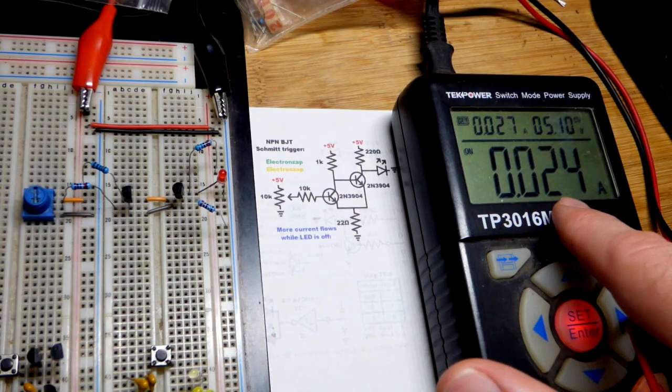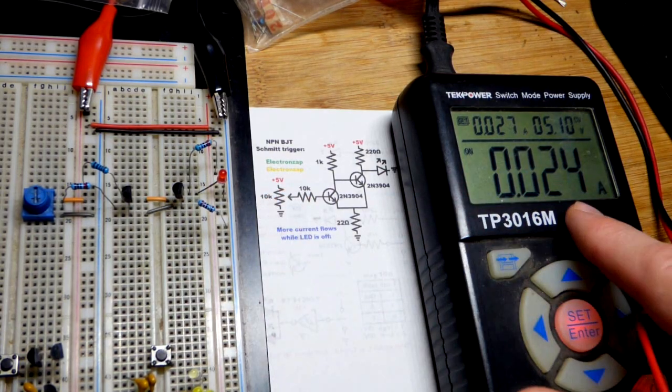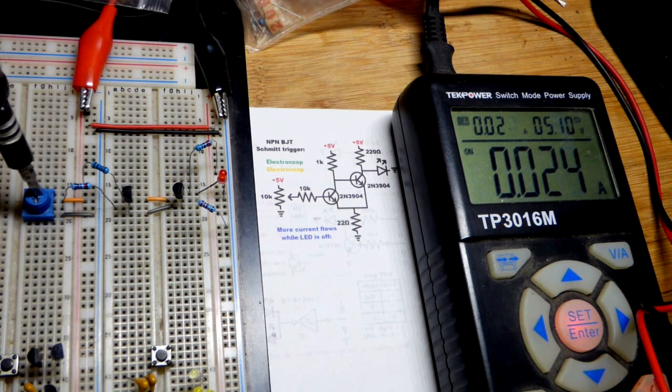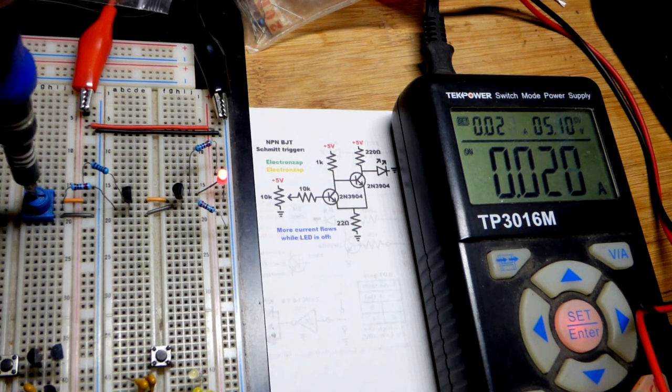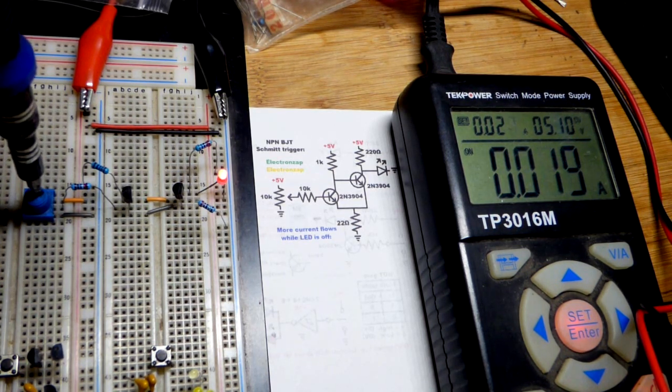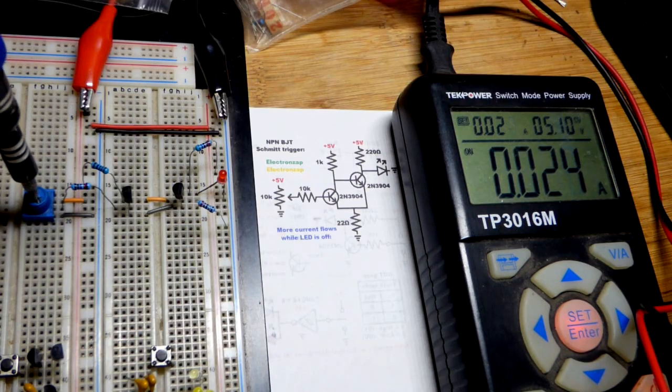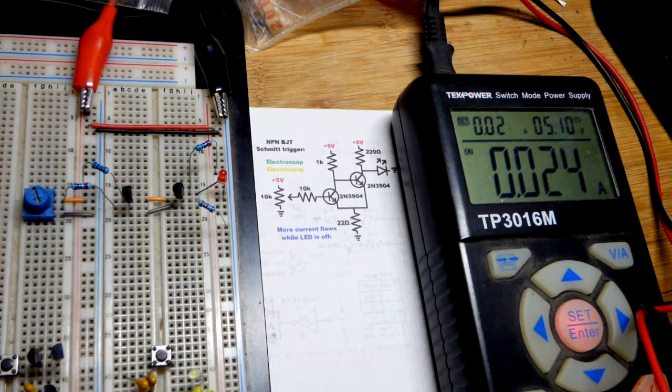And really quickly, this circuit wastes a lot of power. When that LED is off, you would expect no current, but we actually have more current, 24 milliamps approximately flowing, than when the LED is on. So be aware of that as well, this isn't a practical circuit, it's just more kind of a fun circuit.